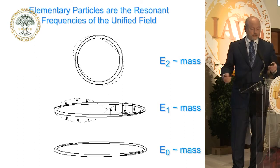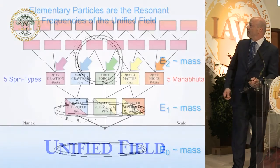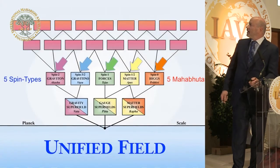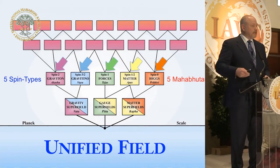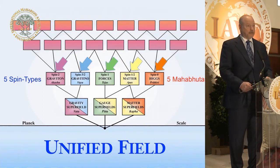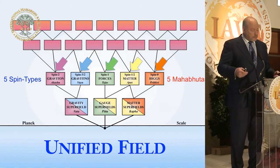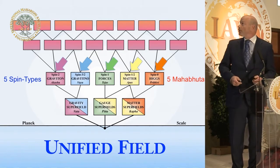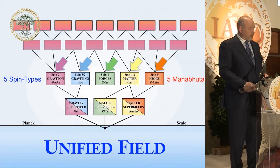The whole thing is really just an expression of vibration. These five spin types, in the language of modern physics, have a corresponding name in the ancient Vedic science of health, Ayurveda. And these five spin types of modern physics correspond to what are called the pancha mahabhutas.